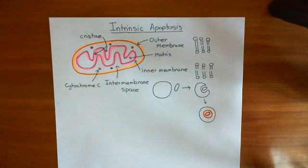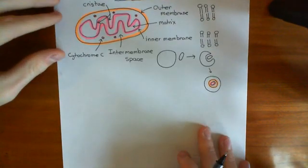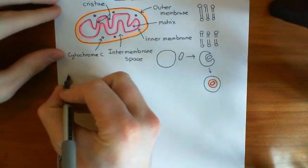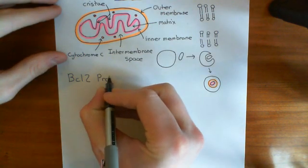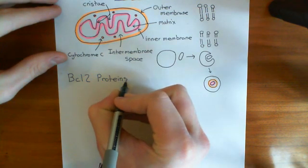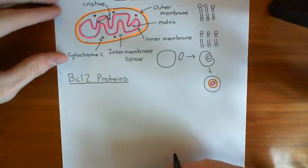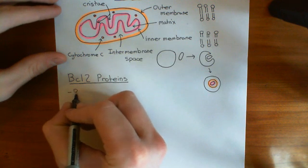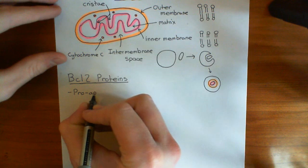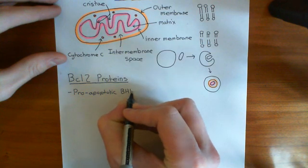Let's look at the BCL2 proteins, because they're very important for allowing the release of cytochrome C. There are three major families of BCL2 proteins. We'll start off with what are known as the pro-apoptotic BH123 proteins.